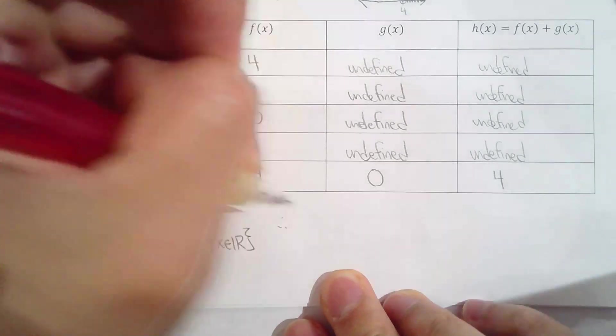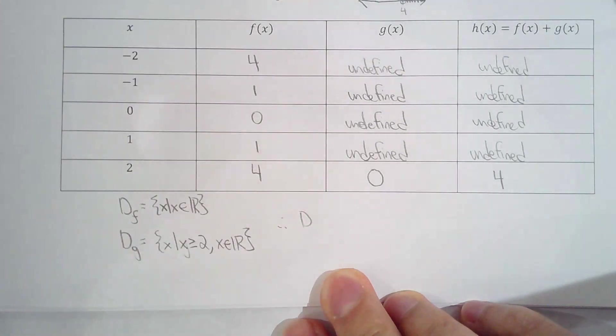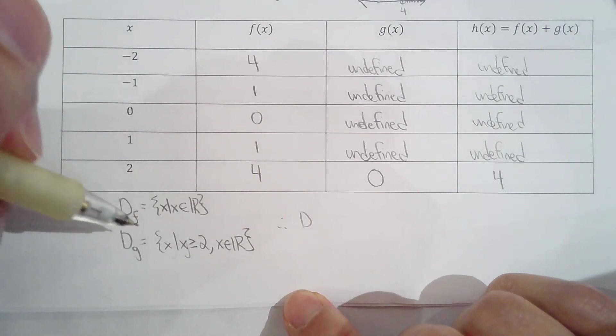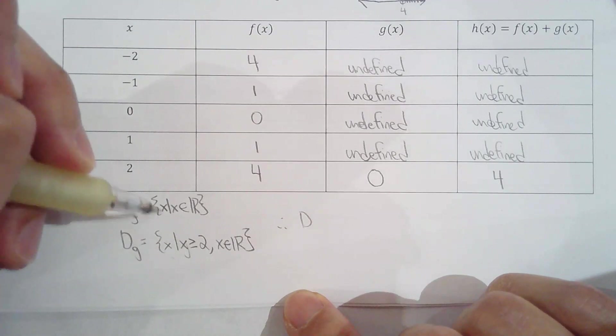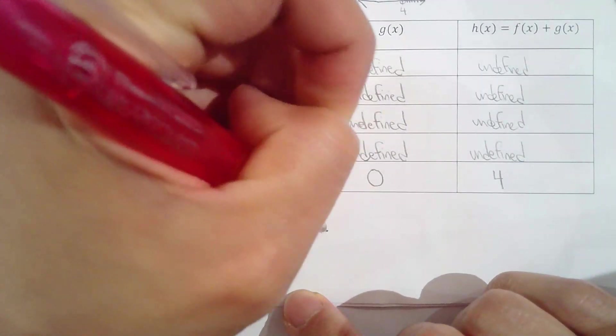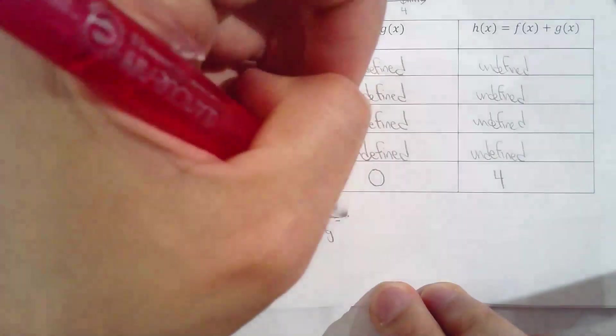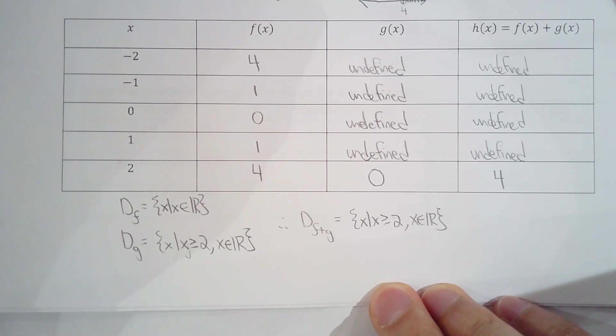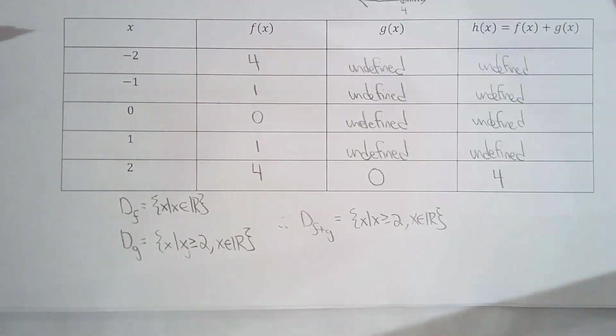Therefore, you can draw number lines here if you want, like I did for the logarithmic expression, but hopefully you can visualize it. If you can't, I would highly recommend the number line and then look at where the two number lines are both highlighted. But it's pretty clear from these two, the domain of f and domain of g, that the domain of the sum of those two functions must be x is greater than or equal to 2.